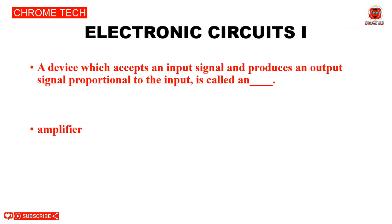Next question: A device which accepts an input signal and produces an output signal proportional to the input is called an dash. The answer is amplifier.